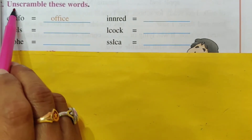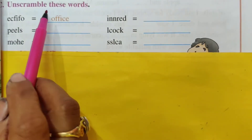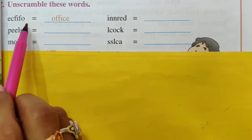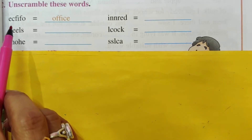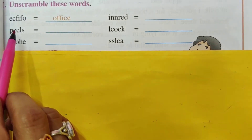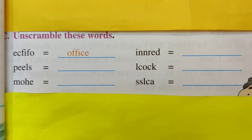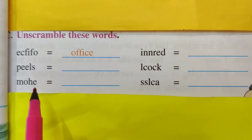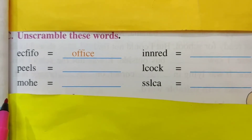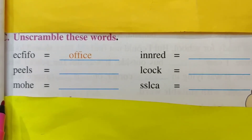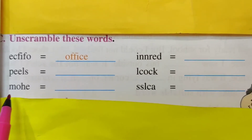Now the third bit: 'Unscramble these words.' Unscramble means jumbled words — he has given the wrong spelling order and we have to write down the correct spelling. Shall we start? Unscramble means what? He has given the spelling in the wrong order, so we have to make the word in the correct order.